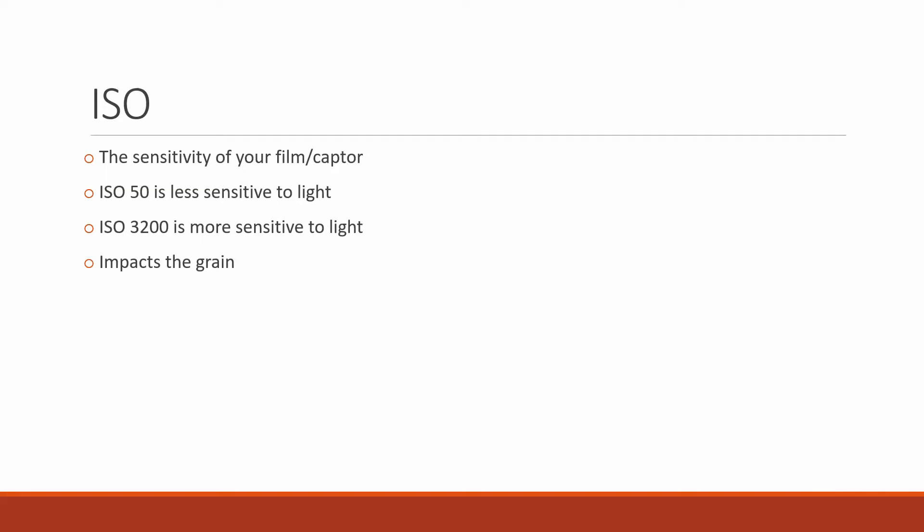Our third parameter is the ISO — that's the sensitivity of your film if you're using a 35mm camera, or the sensitivity of your sensor when using a digital camera or cell phone. ISO 50 is less sensitive to light, whereas ISO 3200 is much more sensitive. The trade-off is that the higher the ISO, the more grain you will see in your image. A long exposure photo at night with ISO 50 or 100 will look less grainy than one taken at ISO 3200.